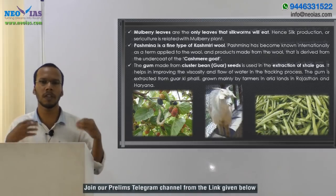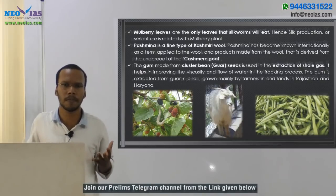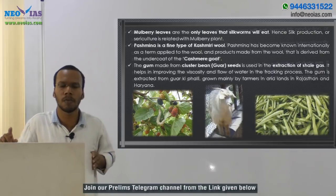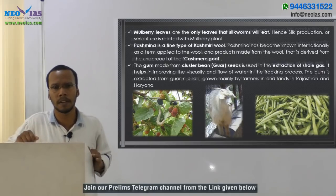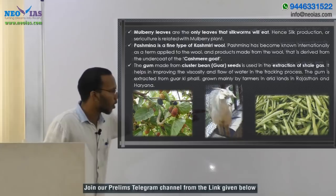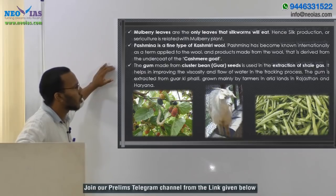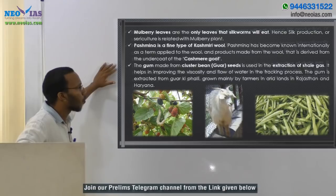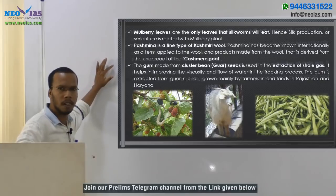Guar gum is used to increase the viscosity of the liquid used in the fracking mechanism. Because of this, there was a huge demand for cluster bean from India, so farmers were cultivating more cluster bean. The gum made from cluster bean or guar seeds is used in the extraction of shale gas and helps improve the viscosity and flow of water in the fracking process. Cluster bean is grown mainly by farmers in arid lands in Rajasthan and Haryana.